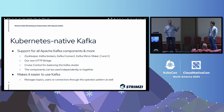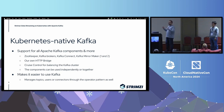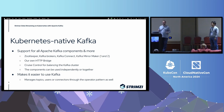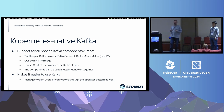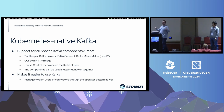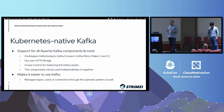To make it really easy to use Kafka, we also have operators for topics and users. If you want to deploy a service using Kafka, you can use Strimzy to declaratively create the user, specify what authentication it uses, what ACL rights it has, and create the topic it will use. All of that can be stored in a GitHub repo with the deployment for the service and deployed to the cluster through a GitOps mechanism.